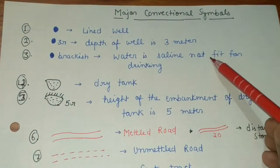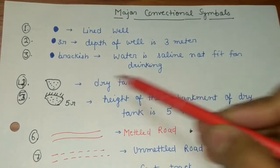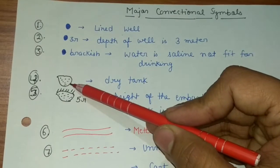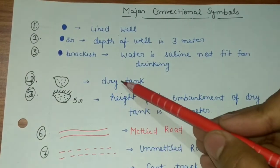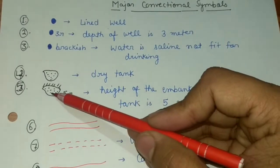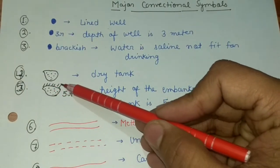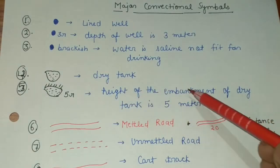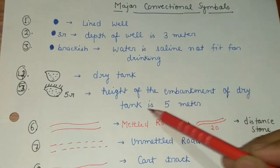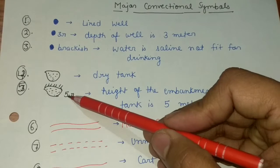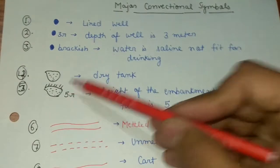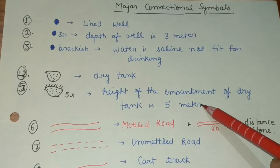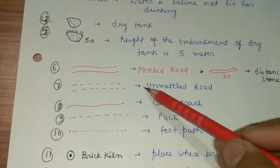The next conventional symbol is shown in black color and represents a dry tank. When the black color appears with specific lines, it represents the height of the embankment of the dry tank. For example, '5' written nearby indicates the embankment height is five meters.